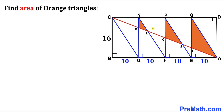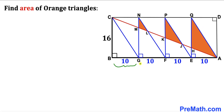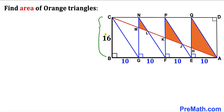Welcome to pre-math. In this video we have three orange triangles fully confined in a rectangle ABCD. We also have four blue right triangles and a main diagonal AC, and the orange triangles are restricted between them. These segments are 10 units long each, and the height of the rectangle BC is 16 units. Our task is to calculate the area of all three orange triangles.